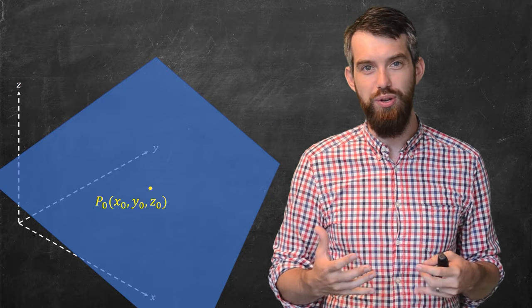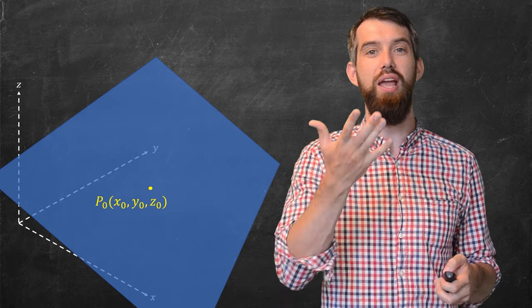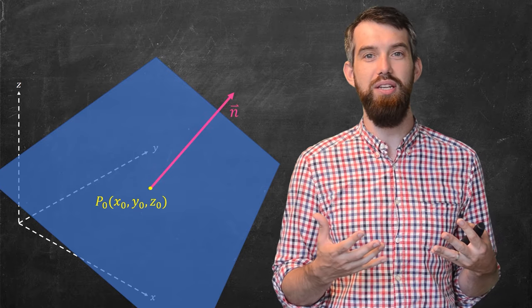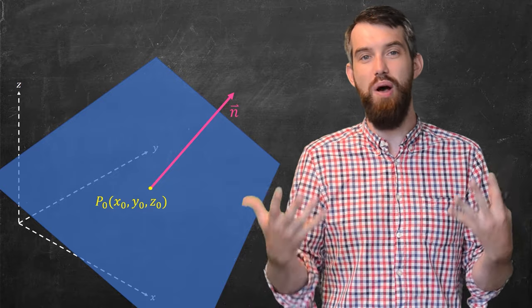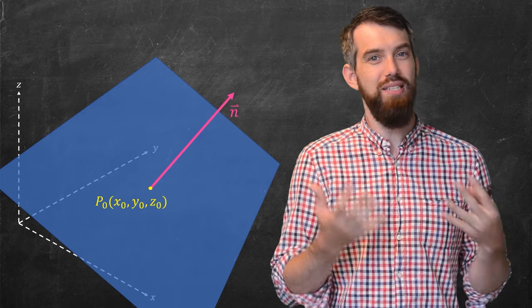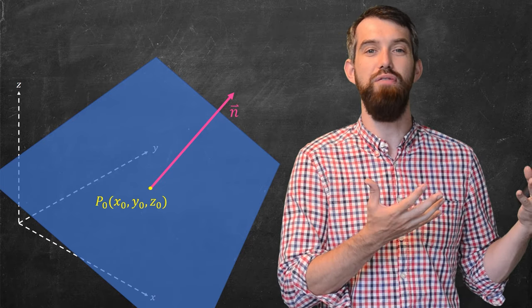So, the piece of information here I'm going to give is one of the choices for a normal vector. A normal vector is a vector that points directly away from the plane. And indeed, if I tell you the normal vector, that in some sense tells you the orientation of the plane.